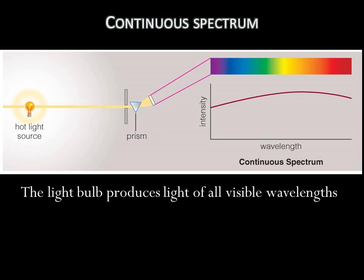The spectrum of a traditional light bulb, the kind with a wire filament, gives an unbroken rainbow of color when you pass its light through a prism. We call this type of spectrum a continuous spectrum.